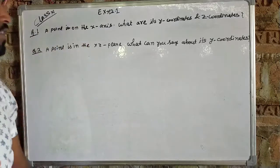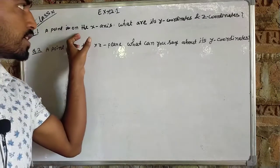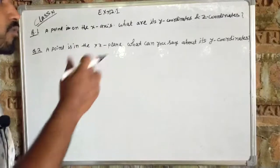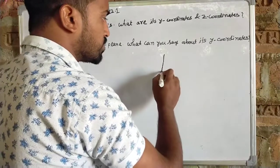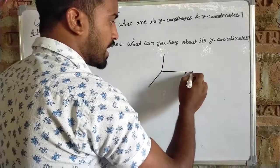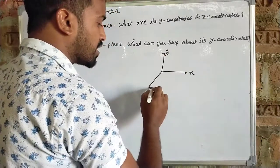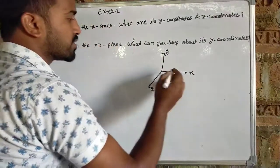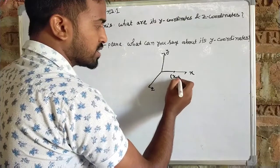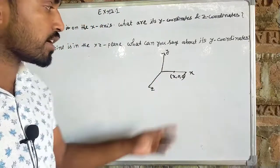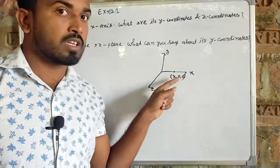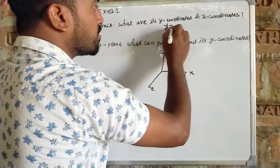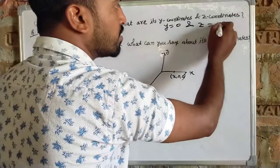So I take a point on the x-axis. This is a point on the x-axis. What are its y-coordinates and z-coordinates? The x-axis point has y equal to 0 and z coordinates are 0.